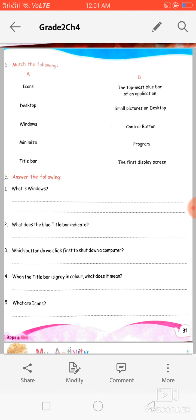So listen first and then you can complete. The first question is what is Windows? So Windows is the most popular program that makes the computer work. Without Windows, computer system cannot work. Second question is what does the blue title bar indicate? So it means if any window's title bar is blue in color, so it means that window is active. So the right answer is the blue title bar indicates the active window.